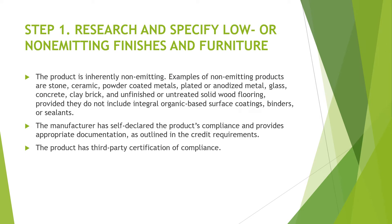There are several steps to reduce exposure to volatile organic compounds. Step one is to research and specify low or non-emitting finishes and furniture. The product may be inherently non-emitting — examples include stone, ceramic, glass, concrete, etc. — and these do not include integral organic-based surface coatings, binders, or sealants. Alternatively, the manufacturer has self-declared the product's compliance and provides appropriate documentation as outlined in the credit requirements, or the product has third-party certification of compliance.